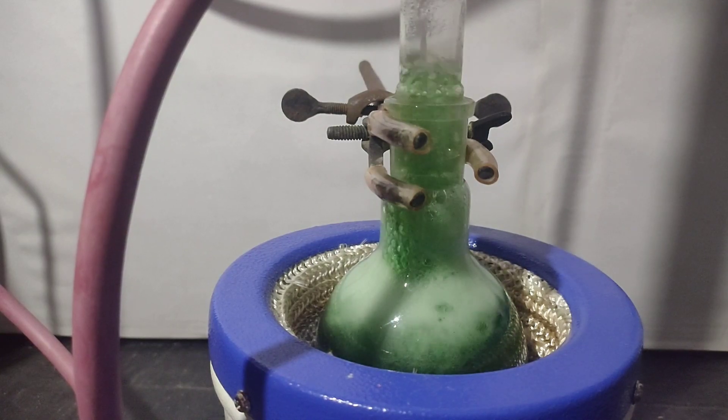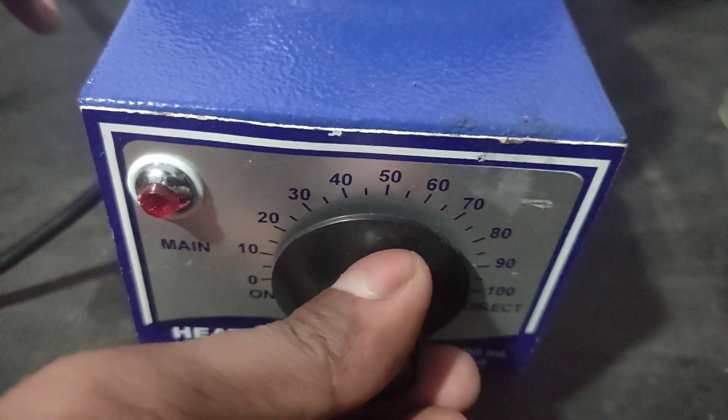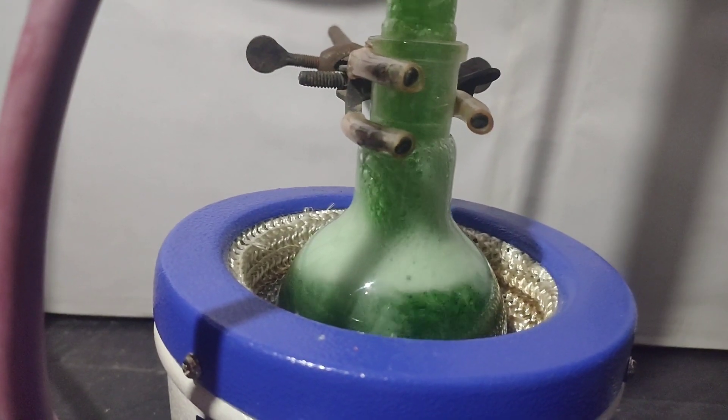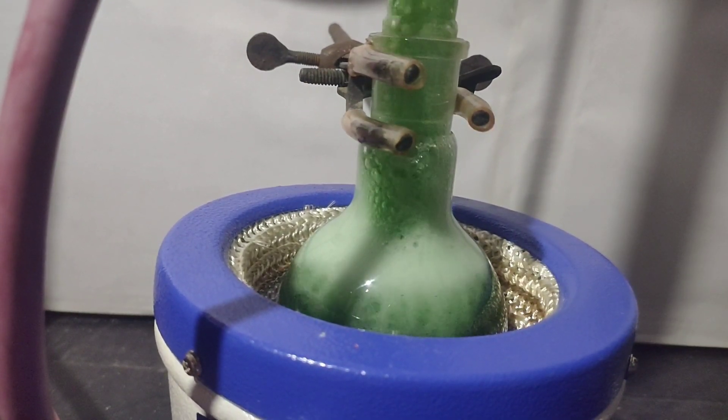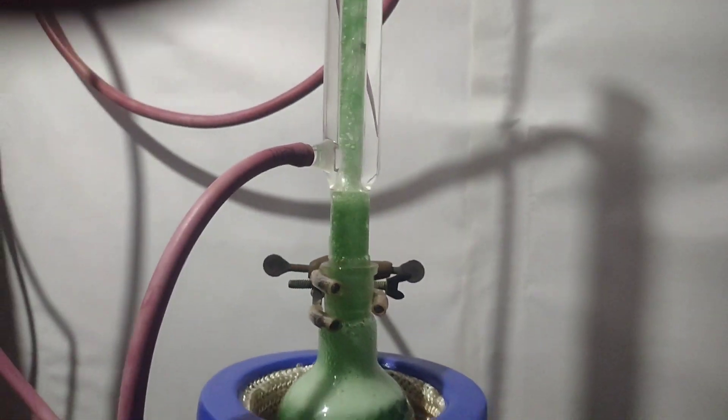When the reaction went vigorous, I switched off the heating mantle. It foamed but didn't come out of the condenser. Iron and chromium is reacting with hydrochloric acid to form iron(II) chloride and chromium chloride respectively, with evolution of hydrogen gas.